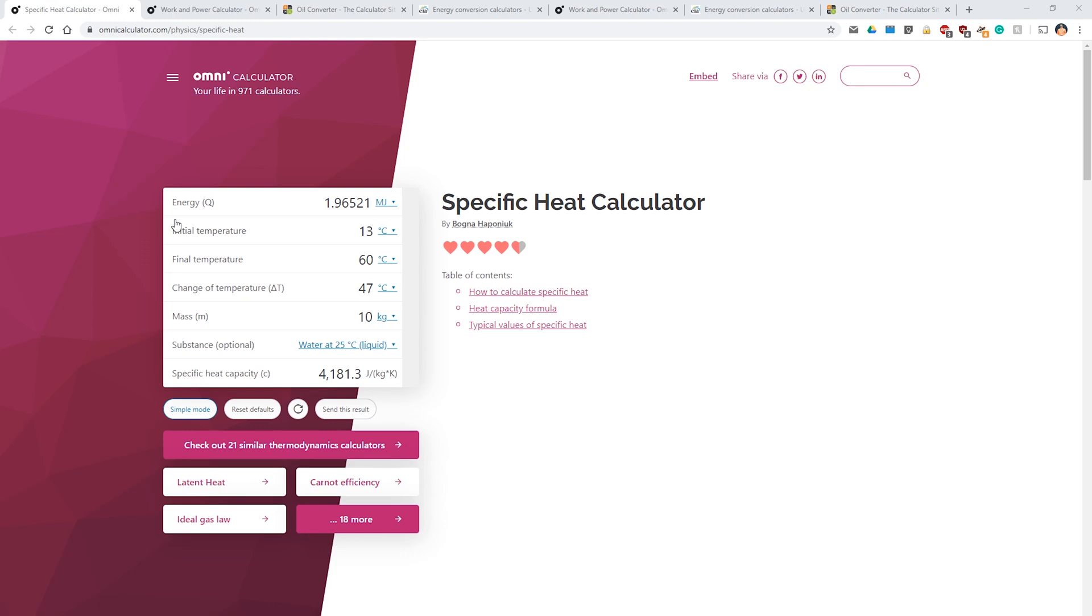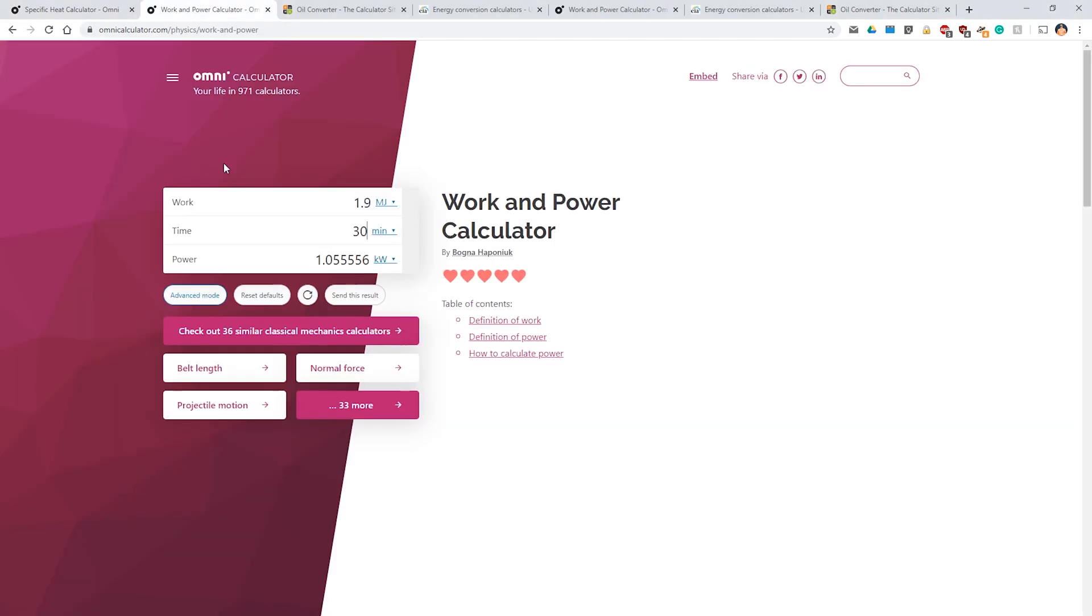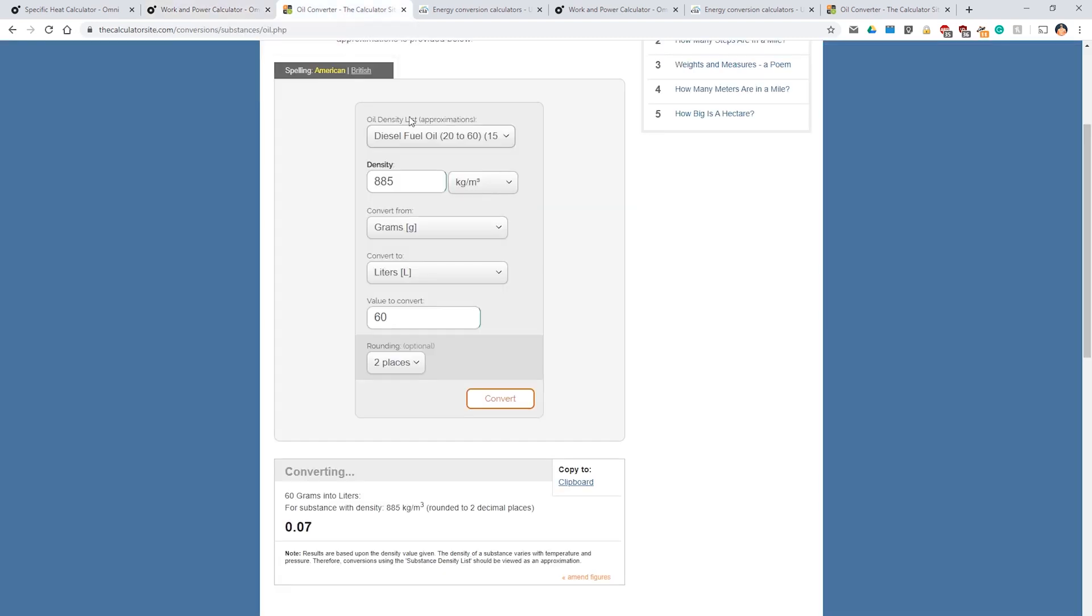Okay, let's run these numbers. So, we started with 13 degrees. We finished at 60 degrees. Which gives us a change of temperature, 47 degrees. And the mass was 10 litres, which is 10 kilograms of water. So, we imparted 1.9 megajoules of energy into that water. And just for those who are interested, 1.9 megajoules in 30 minutes is about 1 kilowatt of energy we put into the thing, give or take.